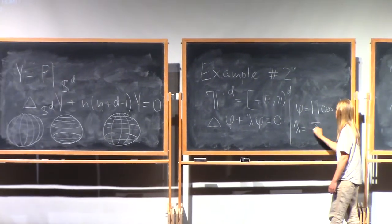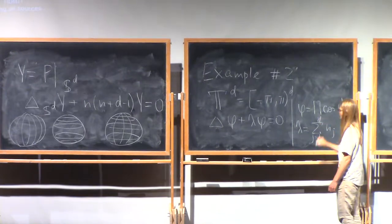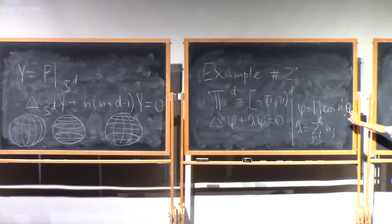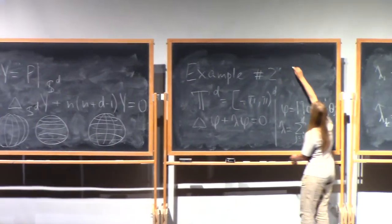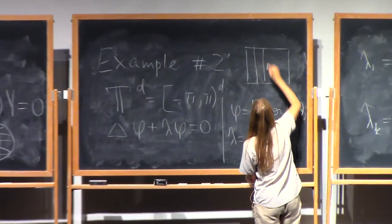The corresponding eigenvalue is sum of the squares. And with this choice of eigenfunctions, once again you will see a very nice picture of zero set.